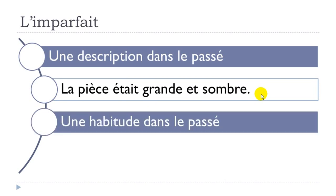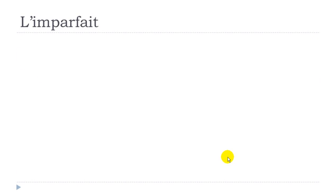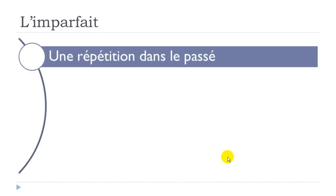The second situation is une habitude dans le passé — a habit, something you used to do in the past. The example is 'je partais' — 'partir' means to leave — 'le matin à 8h'. So if you want to say it's a habit, something you did regularly in the past, you use l'imparfait.